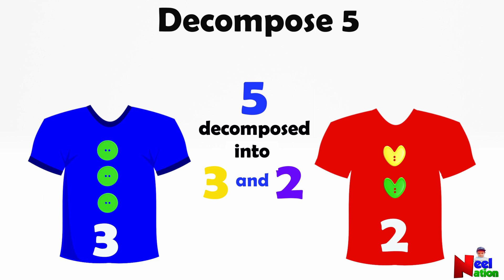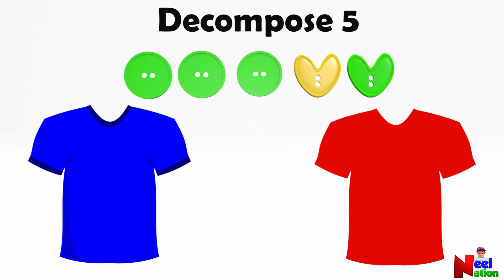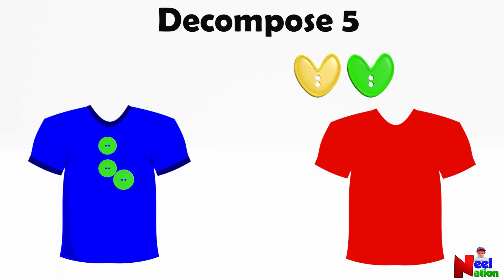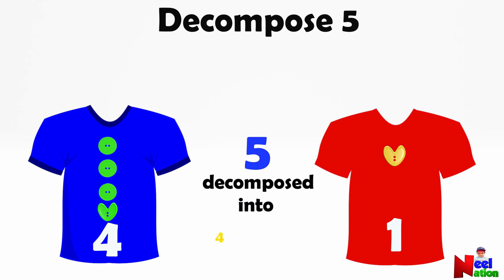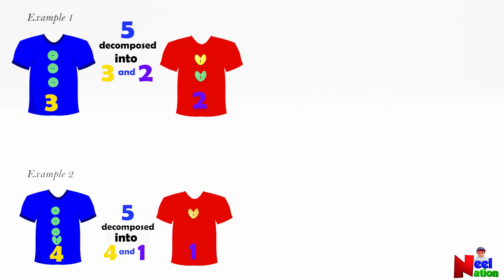Now can you place all the green buttons on the blue shirt and all the yellow buttons on the red shirt? There you go! Now there are four buttons on the blue shirt and one button on the red shirt. Here we decomposed number five into smaller parts of four and one. Awesome! So there are at least two different ways to decompose number five.